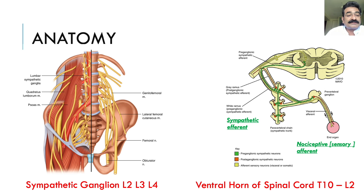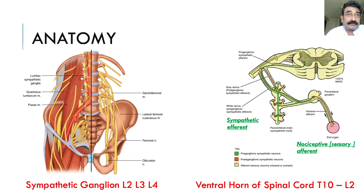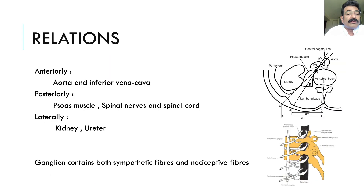Regarding the anatomy and physiology: the lower limb gets sympathetic innervation from sympathetic ganglia situated near L2, L3, and L4, two laterally to the vertebra. These ganglia receive innervation from the ventral horn of the spinal cord at T10 to L2, where they synapse. Post-synaptic sympathetic efferent fibers then go to the lower limb. Importantly, nociceptive sensory afferent fibers also pass through these ganglia. When we ablate the ganglion, two effects occur: no sympathetic outflow and no nociceptive inflow to the CNS.